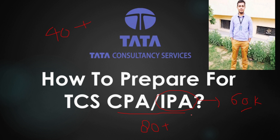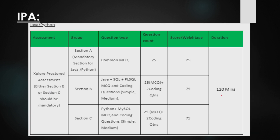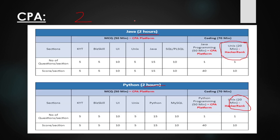Let me first tell you the syllabus of CPA and IPA. The CPA exam is around two hours. Java and Python are covered in two hours. The key difference between CPA and IPA is that CPA has a Unix coding section, whereas IPA does not have a Unix coding section. The Unix coding section in CPA happens on the HackerRank platform.